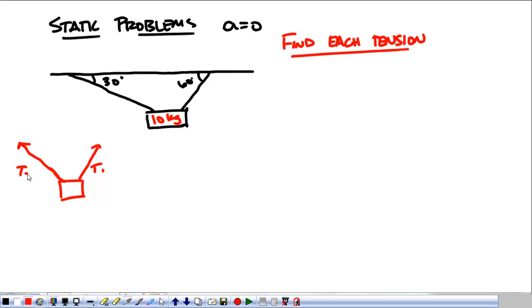Pardon the drawing. And tension 2 pulling this way. And mg pulling down. Now, we know mg is 100 newtons. What we need to do is take tension 1 and tension 2 and look at their components.